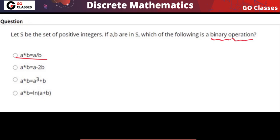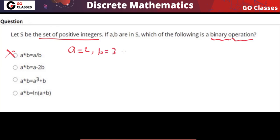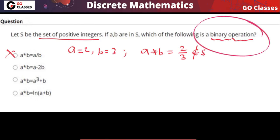Let's see if the first operation is a binary operation. This is not a binary operation because the base set is positive integers. If you take a = 2, b = 3, then a★b = 2/3, which is not a positive integer — it doesn't belong to our base set. So this is not a binary operation; binary operation is the same as closure property.